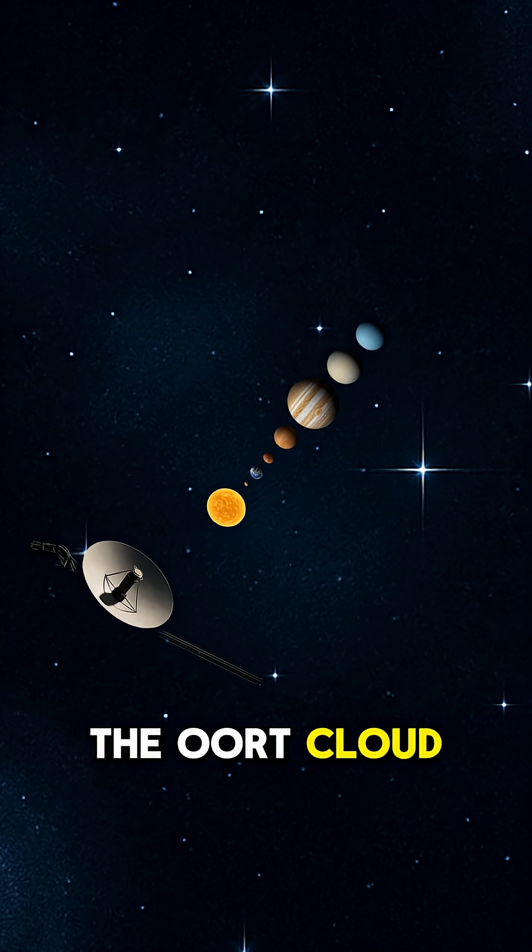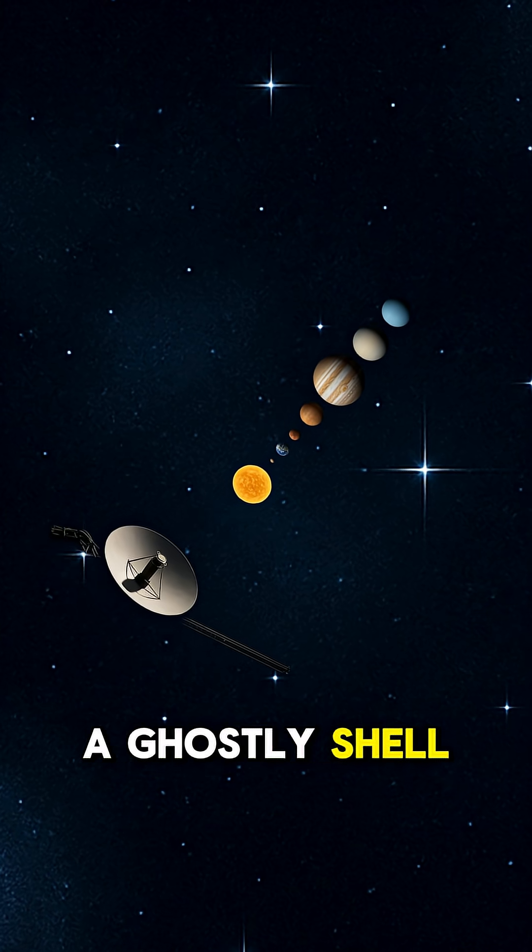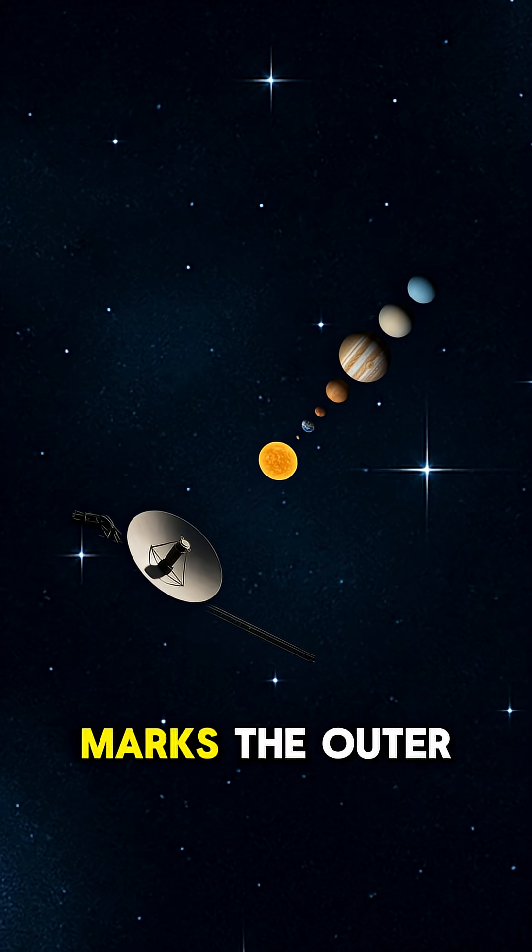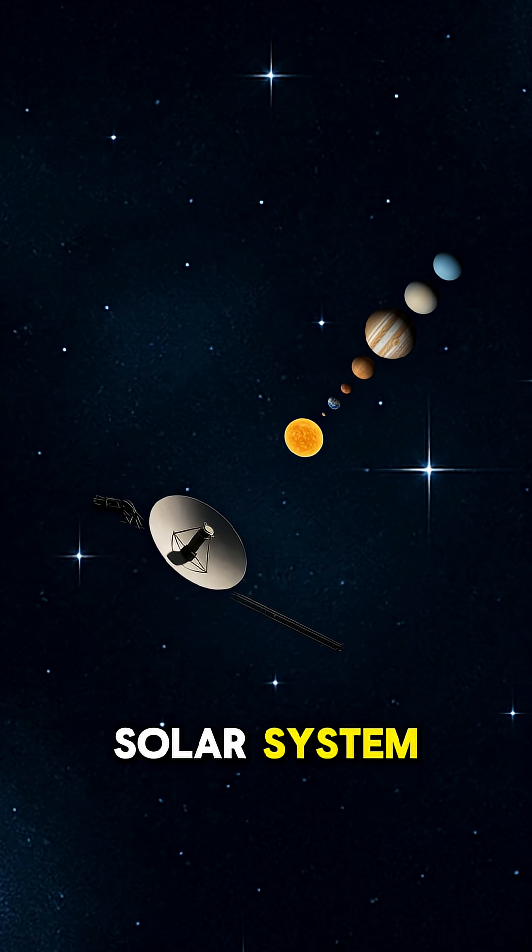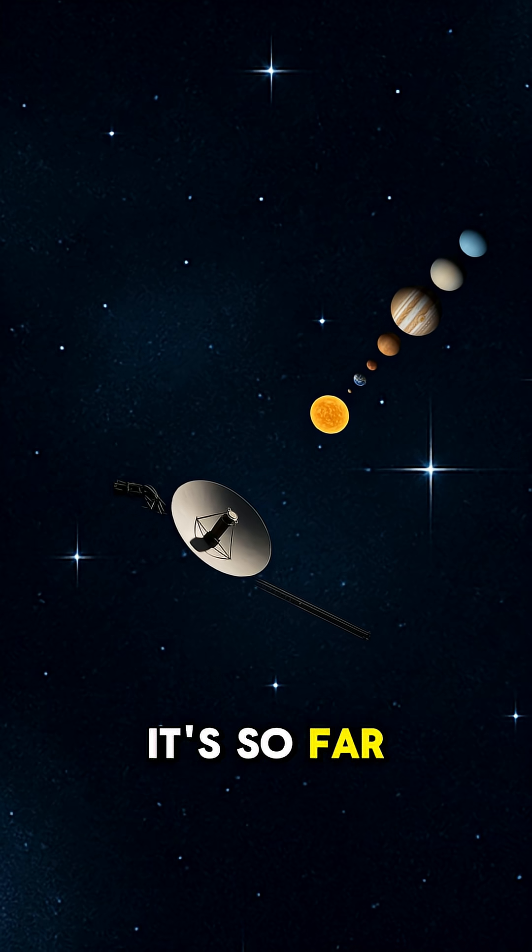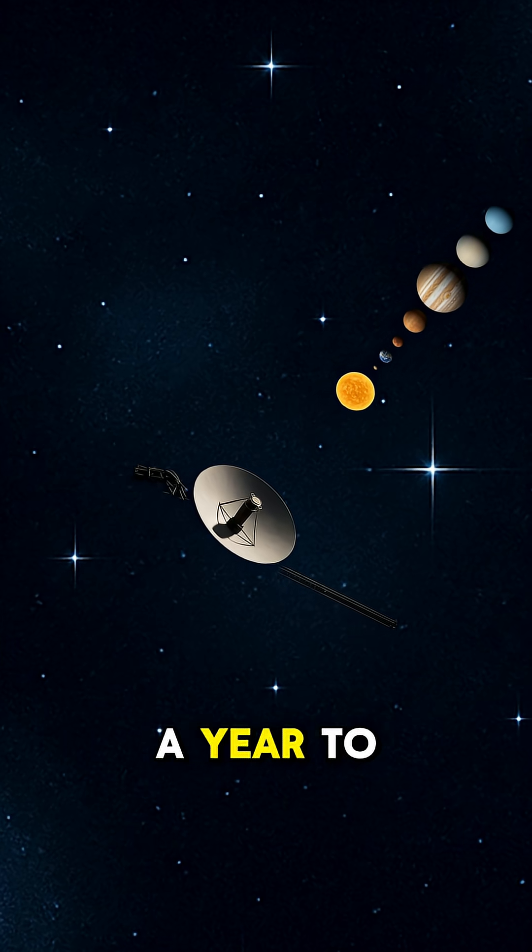The Oort Cloud, a ghostly shell of icy objects, marks the outer edge of our solar system. It's so far, it takes light a year to reach it.